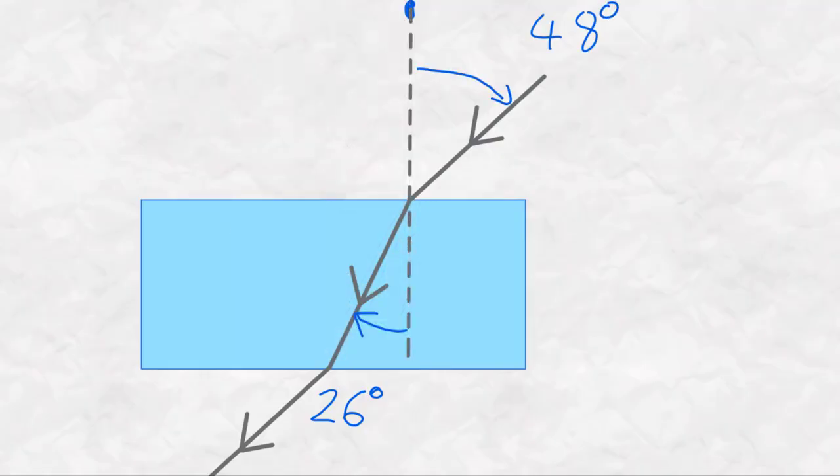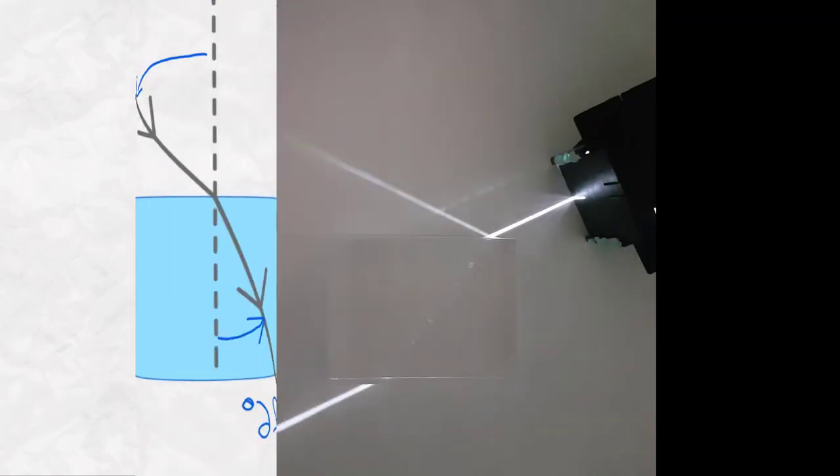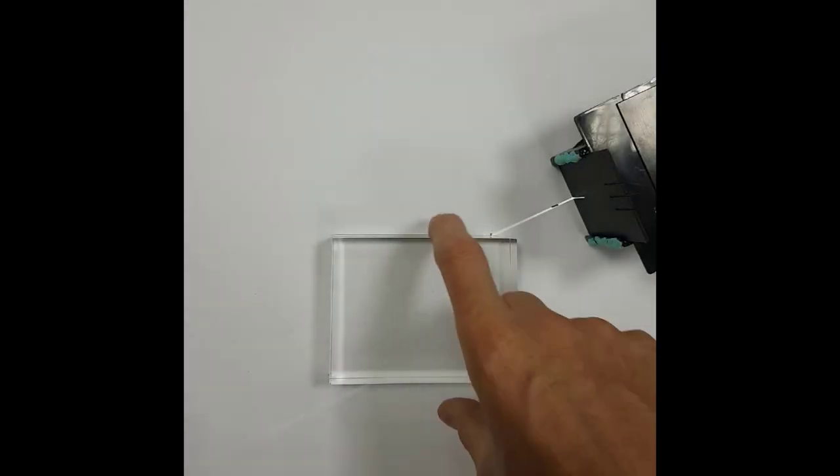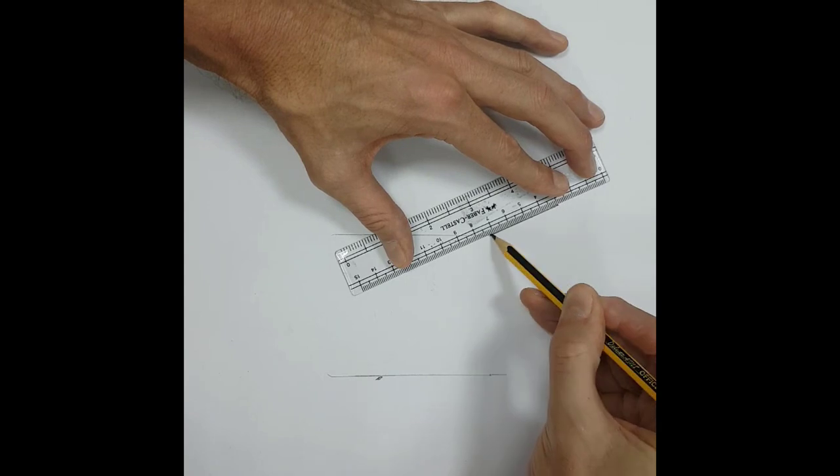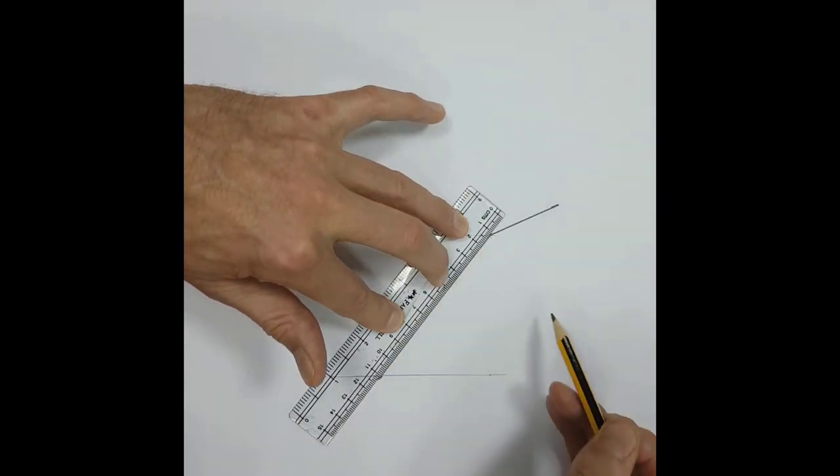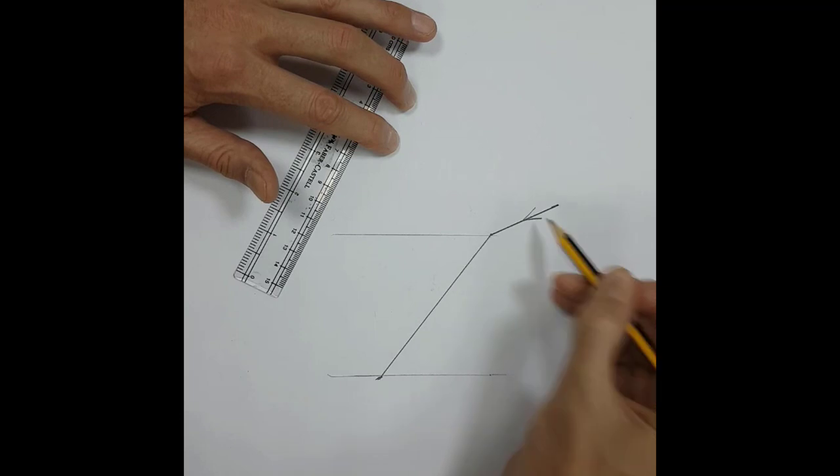In the next section, we're going to measure the angle of incidence and angle of refraction from a real ray. So I mark where the light is coming out of the ray box and the point where it enters the block and the point where it exits the block. Now we can remove the ray box, get my ruler out, and join up my first two marks and my second two marks. Because it's a ray diagram, I always have to put the arrows on to show the direction the light is traveling.